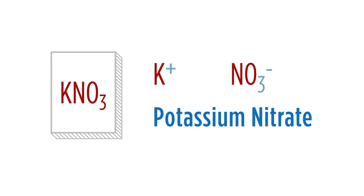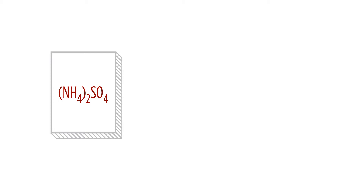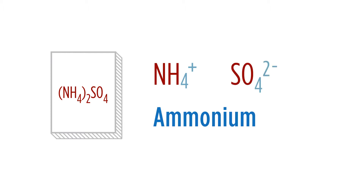Let's look at another example with polyatomics. Here we have (NH4)2SO4. NH4 is ammonium, and SO4(2-) is sulfate. We had to have two ammoniums for the one sulfate, but in the name it's simply ammonium sulfate.